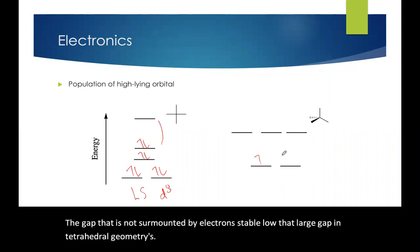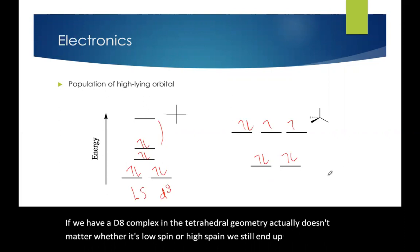If we have a d8 complex in tetrahedral geometry, it actually doesn't matter whether it's low spin or high spin. We still end up with the same end result. It looks like that.